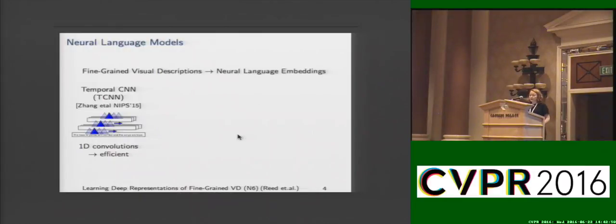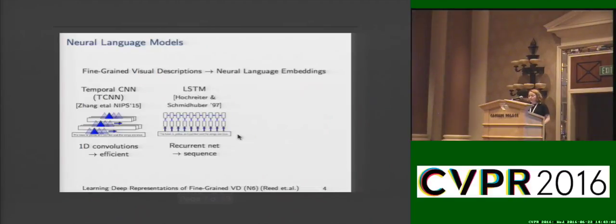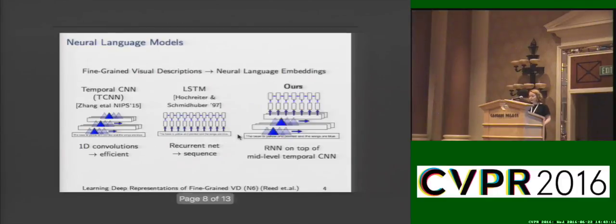After collecting the sentences, the next step is to use natural language embeddings, and for that there are several methods. We started with temporal CNNs that operate on characters with 1D convolutions, which is very efficient. Another method is LSTM, which uses recurrent neural networks and encodes the sequence of words in a sentence. Our proposal in this work is to combine the two: we stacked an RNN on top of a mid-level temporal CNN. That is both very efficient and also encodes the sequence.